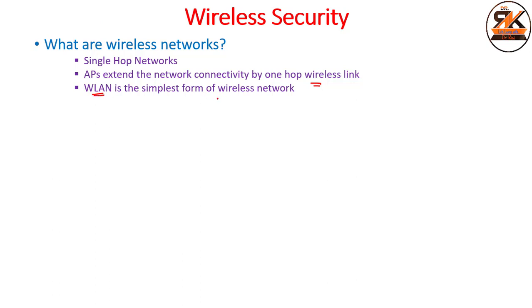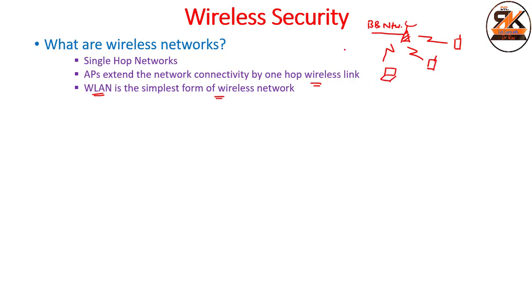Wireless LAN is the simplest form of the wireless network. There we have an access point connected through some wire with the backbone network, and from this access point you have single-hop communication to the wireless devices — maybe your phone or your laptop. This forms your wireless network, and wireless LAN is the simplest example of these networks.